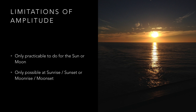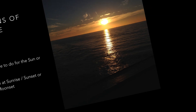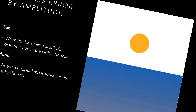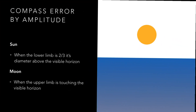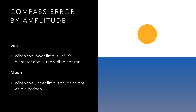The celestial horizon is not the same as the visible horizon, and as such the bearing has to be taken when either the sun's lower limb is two thirds its diameter above the horizon, or in the case of the moon when its upper limb is just touching the horizon.